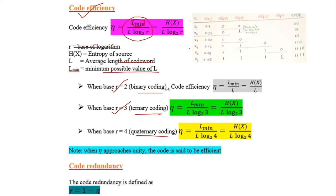Lmin is the minimum possible value of L. In this coding example, the codewords have different lengths: 2 bit, 2 bit, 2 bit, 3 bit, 4 bit, and 4 bit. The minimum value is Lmin = 2. When the efficiency approaches unity, we say this is efficient coding.